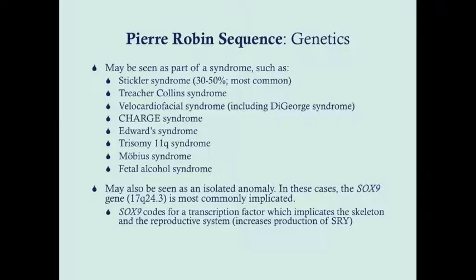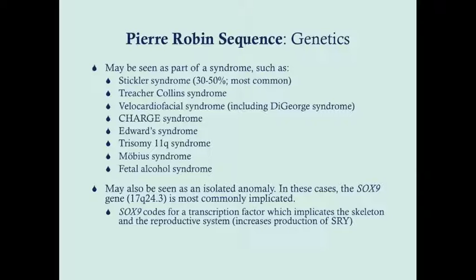The Y chromosome doesn't do a whole lot except make you male, but it increases production of SRY. SRY's translation product is anti-Müllerian hormone, which induces malformation. This condition is called campomelic dysplasia.